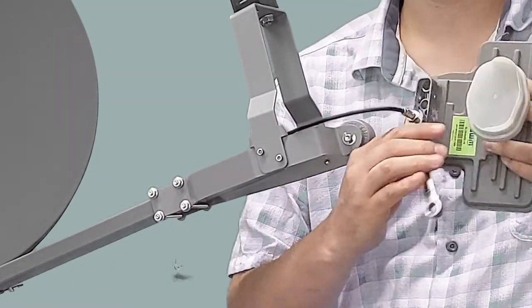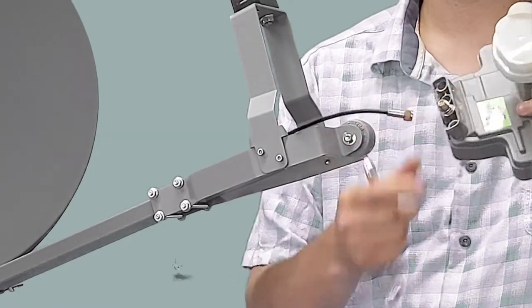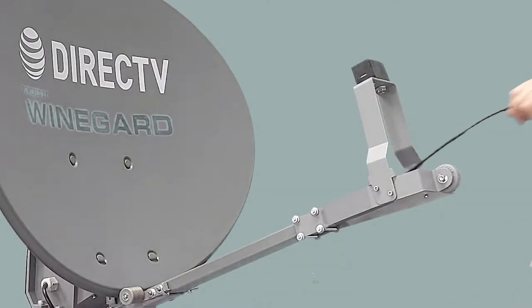Using the 7/16ths wrench, disconnect the coax cable from the LMB and set it to the side. Now pull the cable out of the arm.